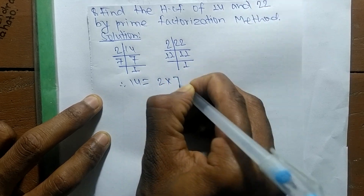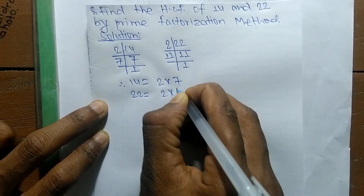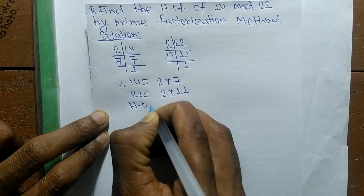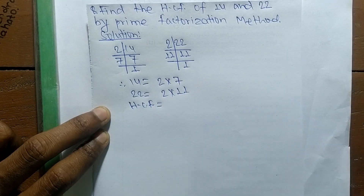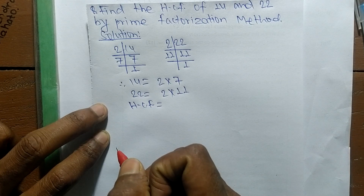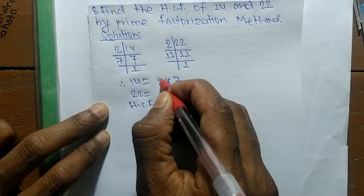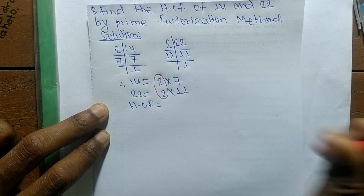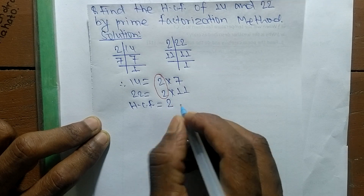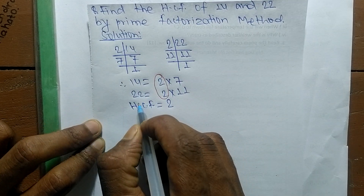And 22 is equal to 2 times 11. So the HCF is equal to — we have to find out the common factors in the prime factors of 14 and 22. The common factor here is 2, so the HCF is equal to 2. Therefore, 2 is the highest common factor of 14 and 22.